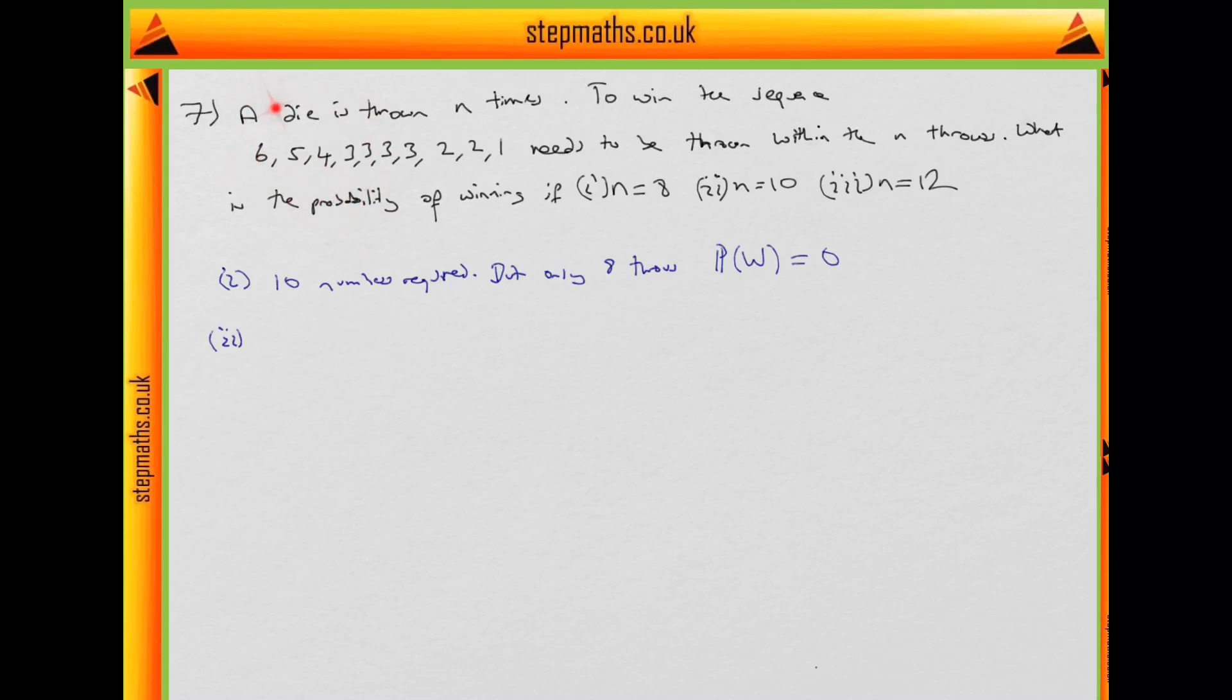So on the first throw, we have a probability of a sixth of getting a 6. Then we have a probability of a sixth of getting a 5, a sixth of getting a 4, a sixth of getting a 3, and so on. So in fact, the probability of winning is 1 over 6 to the 10th. Because it's 1 sixth on each throw, getting the exact number we require. There's no interchanging.